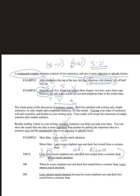Another way to write it: when he wears elephant ears and duck feet rented from a costume shop — since we started with 'when,' a dependent word, we need a comma — then: Larry attracts much attention. We can also put the dependent word in the middle with no comma: Larry attracts much attention because he wears elephant ears and duck feet rented from a costume shop.